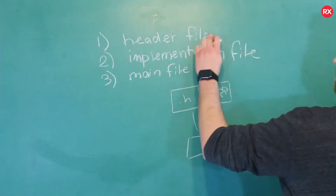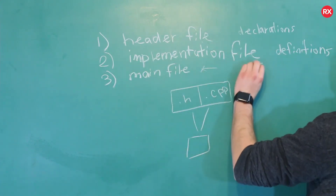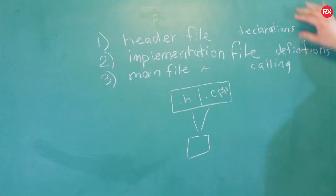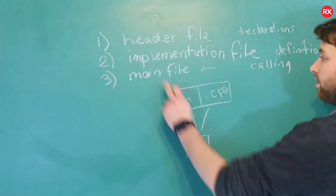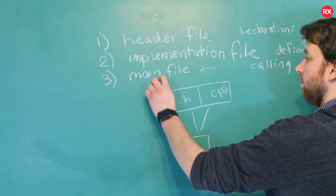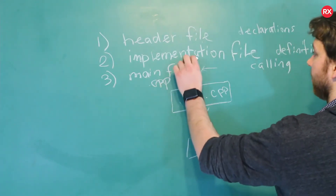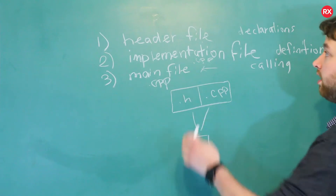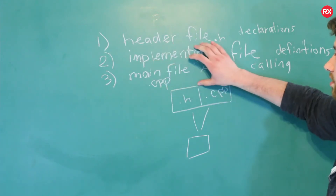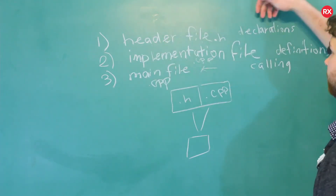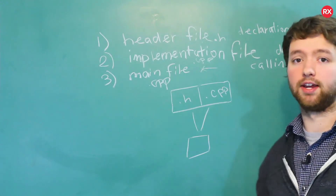Another way to think of how this is split up: the header file contains declarations, the implementation file contains definitions, and the main file contains the callings. That's where we declare our functions, define them, and call them. As for file extensions, the main file is .cpp (or .c or .cc), same for the implementation file. The header file is .h. The two .cpp files contain C++ code that gets compiled, while the header file is like an interface — it describes how to work with the implementation file but doesn't contain executable code or function definitions.